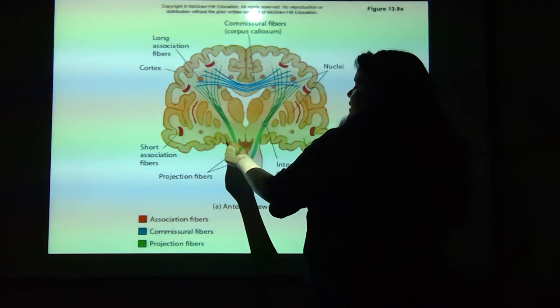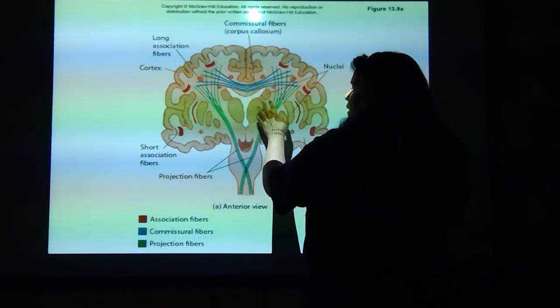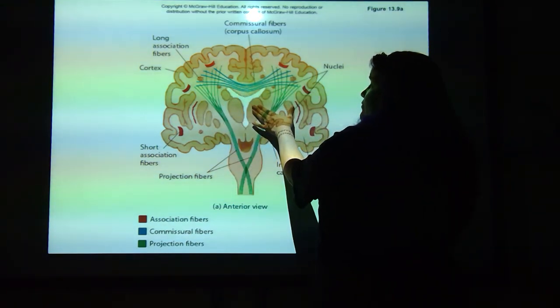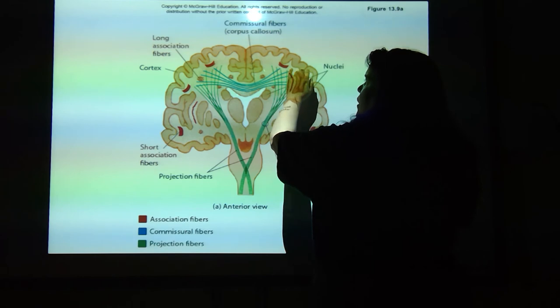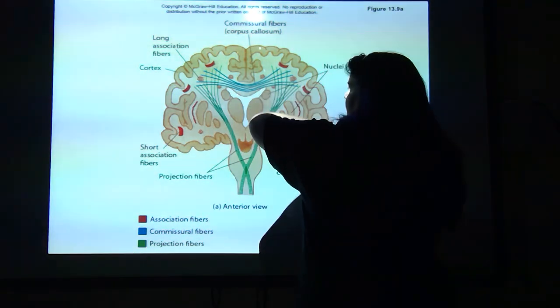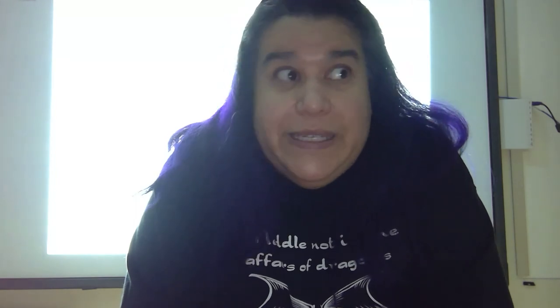Notice the outer edge here is all darker than the inside — that's because this is the gray matter. The nuclei are made out of gray matter, but also rimming the outside of your cerebrum is all gray matter. It's one of the reasons why if there's an open head wound, they talk about being able to see gray matter — if you can see any part of the brain, it's going to be the gray matter.